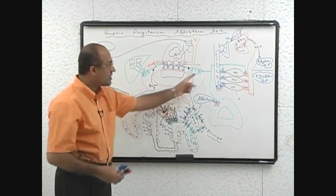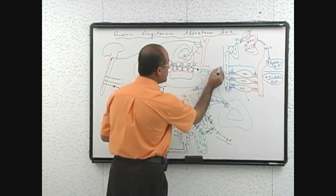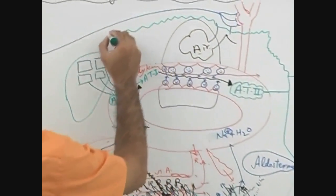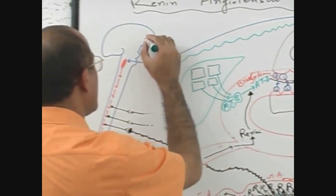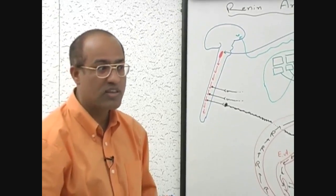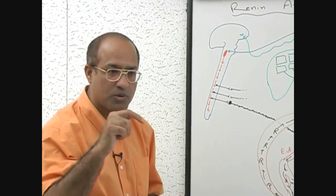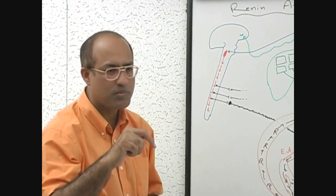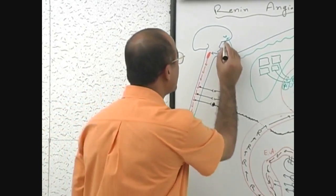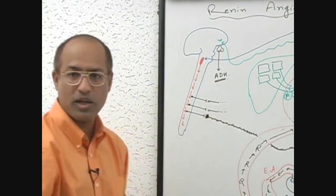Angiotensin 2 has done this work through aldosterone. Now angiotensin 2 will go to the central nervous system. It will work on receptors present in the hypothalamus. Angiotensin 2 will activate action potentials which will reach to the posterior pituitary and from there ADH will come out. Don't tell me oxytocin. That is not going to help the patient right now.